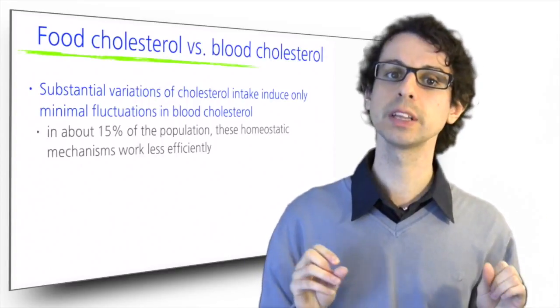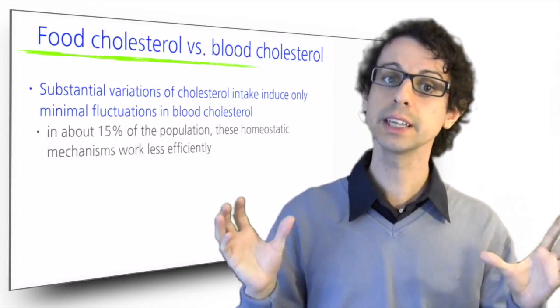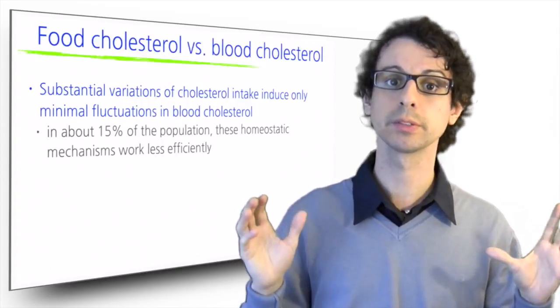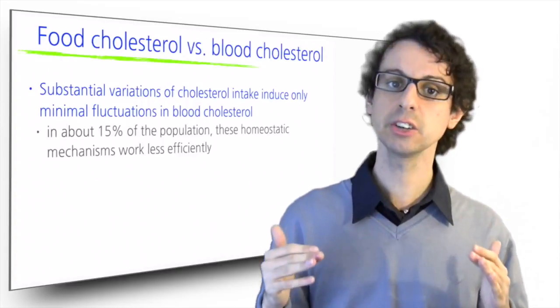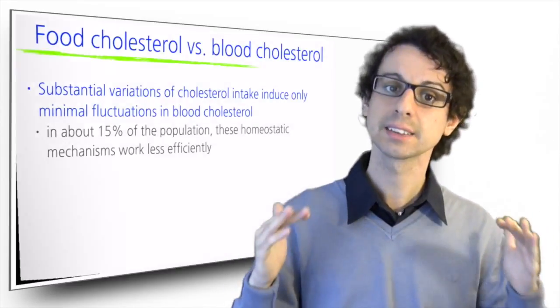In about 15% of the population, however, which carries a particular polymorphism for apoprotein E, these homeostatic mechanisms work less efficiently, and variations in blood cholesterol are less stable.